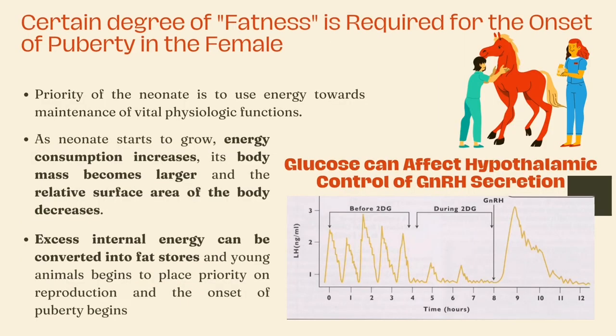A certain degree of fatness is required for the onset of puberty in the female. The priority of the neonate is to use energy to maintain vital physiologic functions; therefore, non-essential processes such as reproduction are of low importance. As the neonate starts to grow, energy consumption increases, its body mass becomes more prominent, and the relative surface area of the body decreases. This allows a shift in metabolic expenditure so that non-vital physiological functions begin to develop. As this shift occurs, the overall metabolic rate decreases, more internal energy becomes available for non-vital functions, excess internal energy can be converted into fat stores, and young animals begin to place priority on reproduction — and the onset of puberty begins.